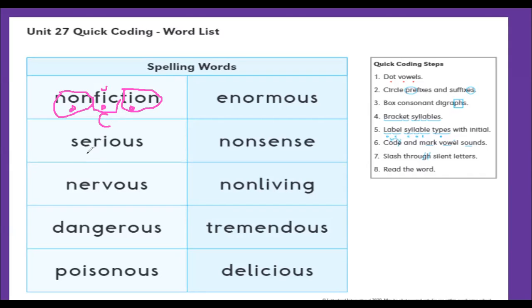Serious - dot our vowels. We are going to circle our suffixes, I-O-U-S. We are going to bracket the 'sear'. We see that the E-R makes an unexpected sound, so we draw a wavy line when letters are making unexpected sounds. And we know that E-R is an R-controlled vowel.